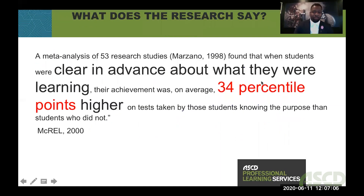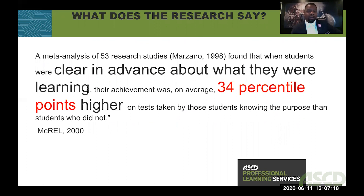So just be clear. Bob Marzano did a meta-analysis of 53 research studies that found that when students were clear in advance about what they are learning, their achievement was on average 34 percentiles higher on those tasks and tests than those who did not understand the goal of the task.